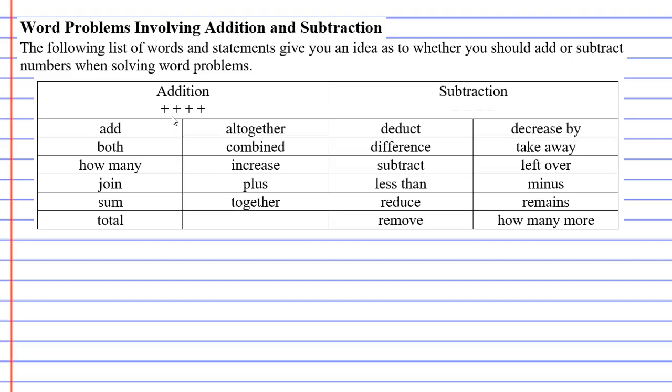Let's say I said to you to reduce 10 by 3. We can see the word reduce is under subtraction. So that means to go 10 minus 3 equals 7.